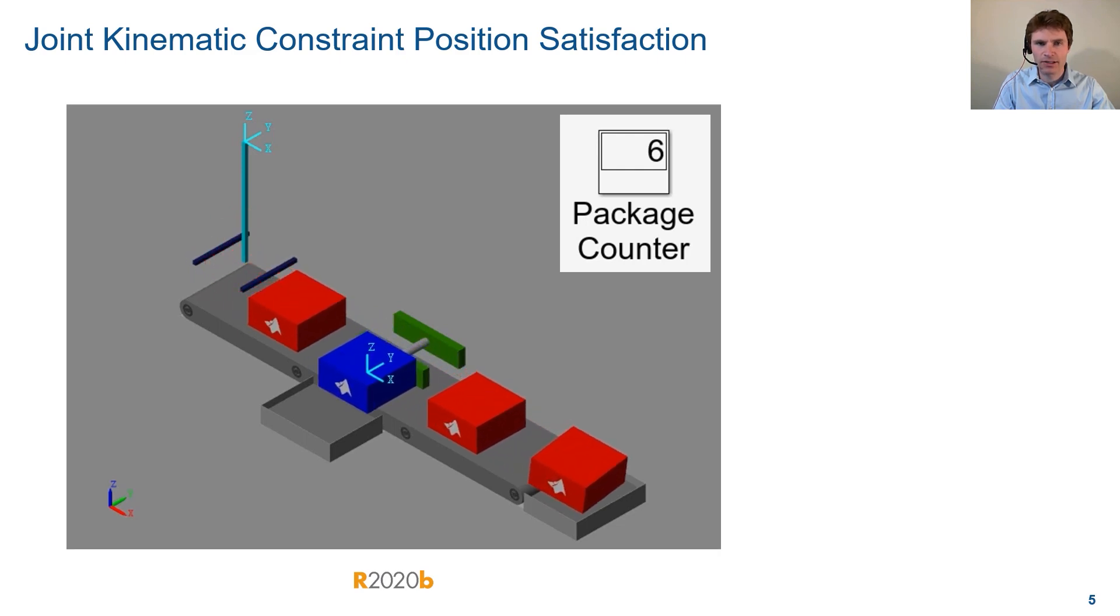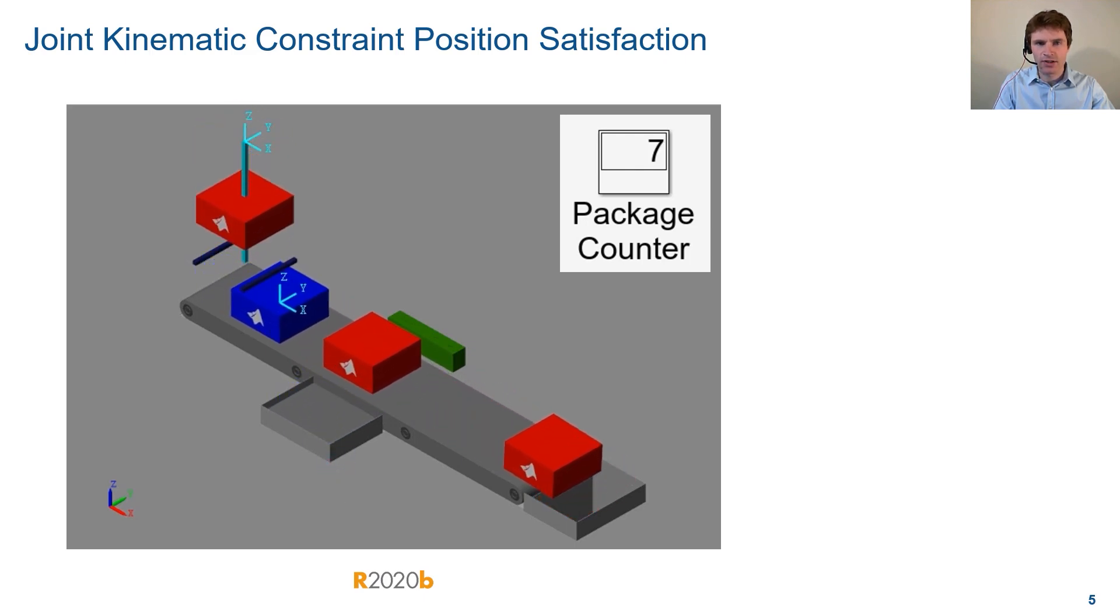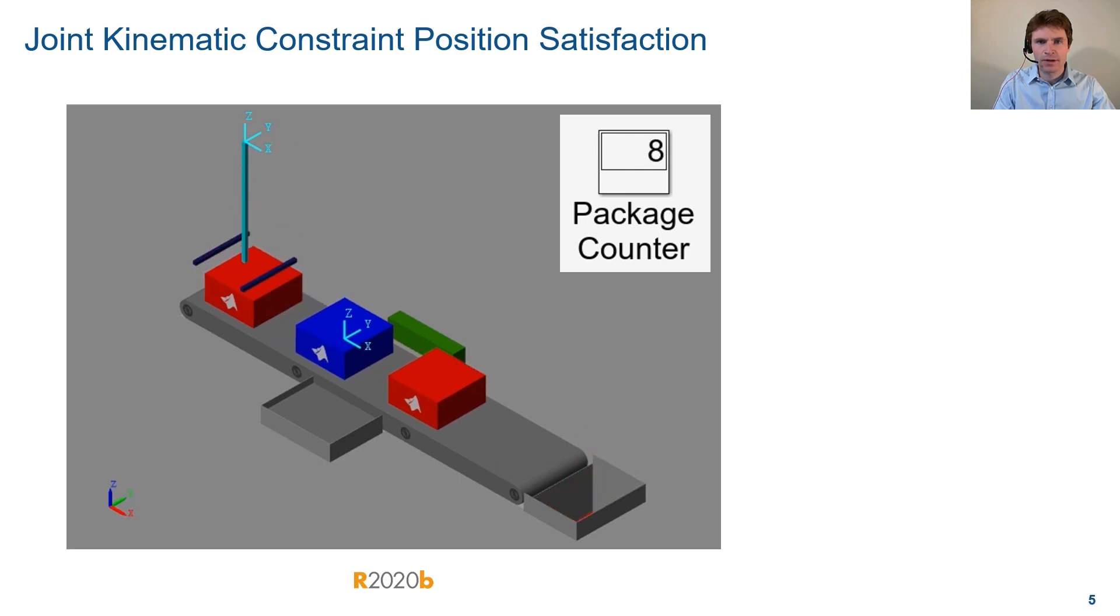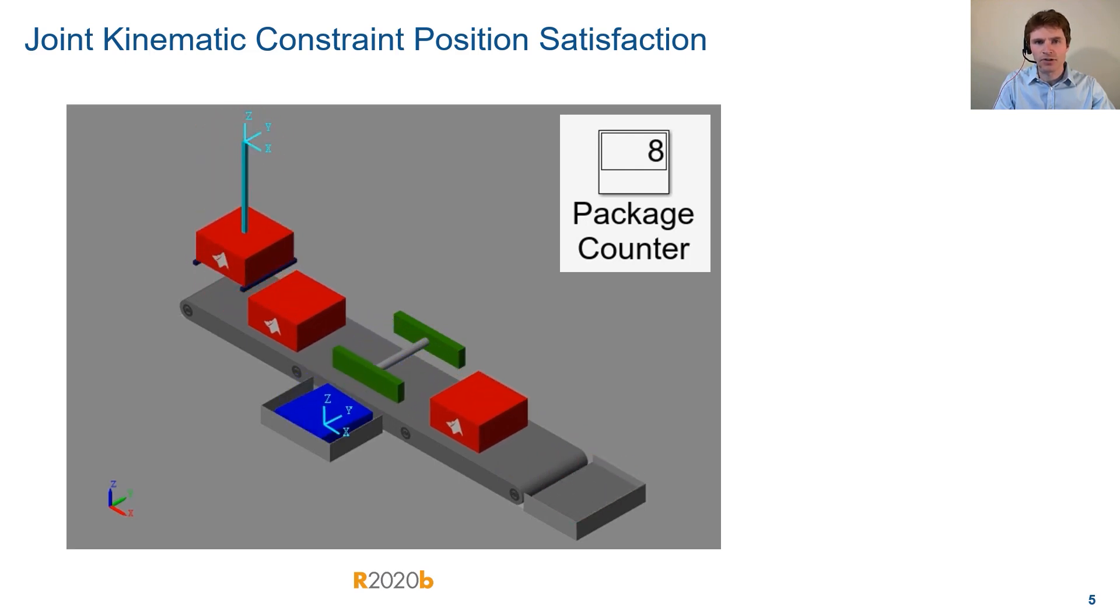Highlighted is a variable mode prismatic joint attached to the blue package. When the box is dropped onto the conveyor, the joint is disengaged. When it disappears down the chute, the mode is set to normal to bring it back to the start.